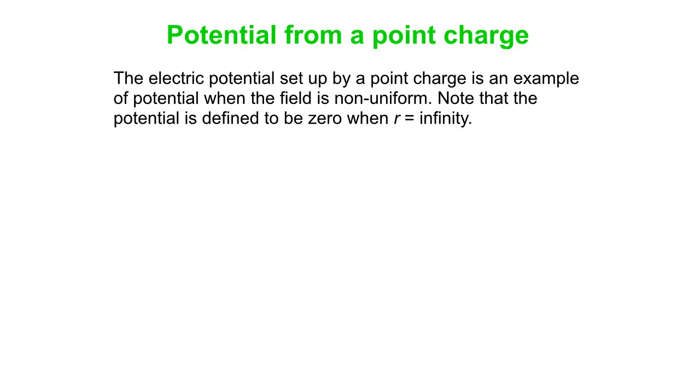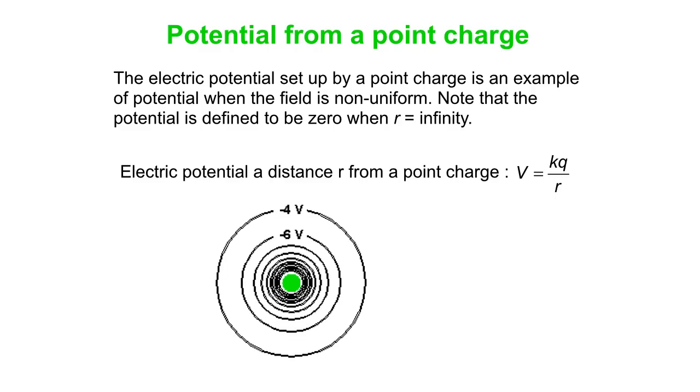If you have a point charge, then you get a very non-uniform potential. Note that the potential is defined to be zero when r is infinity. Here we have electrical potential at distance r from a point charge. It's going to remind us a little bit about the E equation. E is kq over r squared. But two big differences: field is a vector, potential is a scalar. Field has 1 over r squared in it, potential just has 1 over r. Here are some equipotential lines near some charge. You get the minus 4 volt line a little further out, the minus 6 volt closer, the next one would be minus 8.